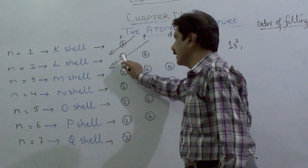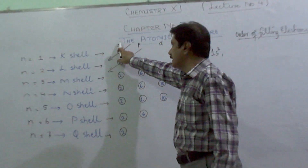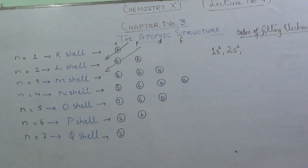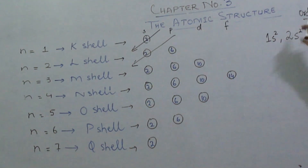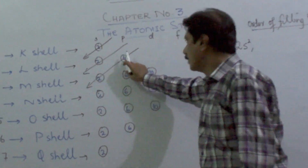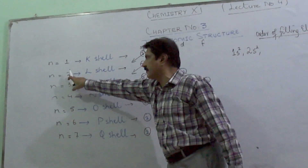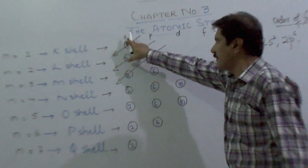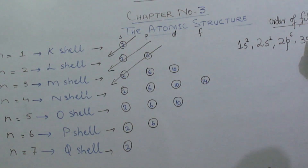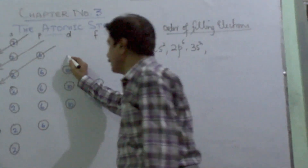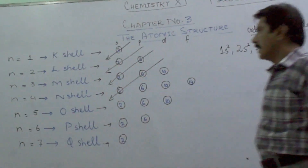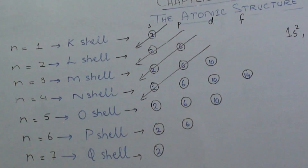Then, following the second arrow, two electrons will be entered into the S orbital of second shell, so we write 2S2. Note it shall not be read as '1S squared, 2S squared' but rather as '1S2, 2S2'. Then following the third arrow, six electrons will be entered into the P orbital of second shell: 2P6, followed by two electrons in the S orbital of the third shell: 3S2. Again six electrons enter the P orbital of third shell, then two electrons in the fourth S orbital: 3P6 and 4S2.